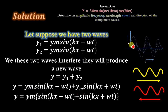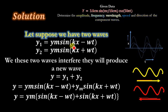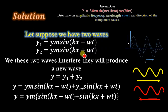Let's suppose we have two waves y1 and y2, and both waves are travelling in opposite directions — one in this direction and the second wave in this direction. The wave equation for y1 is y1 = ym sin(kx − ωt), while the wave equation for the second wave is y2 = ym sin(kx + ωt). The first has minus ωt and the second has plus ωt because they travel in opposite directions.